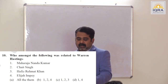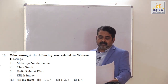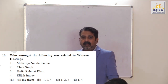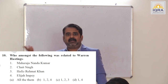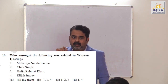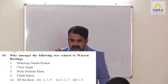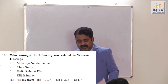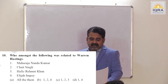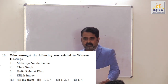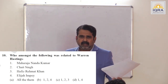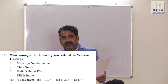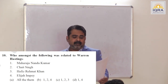Who were related to Warren Hastings? Maharaja Nandakumar and Chait Singh — by the Treaty of Banaras, company took away Banaras and Chait Singh was ordered to give 22 lakh per annum. Warren Hastings played the game and took away Banaras from Chait Singh. Hafez Rahmat Khan was the ruler of Rohilkhand, defeated in the Battle of Miranpur-Katra. Elijah Impey was Chief Justice of the Supreme Court established during his time. Answer is A.